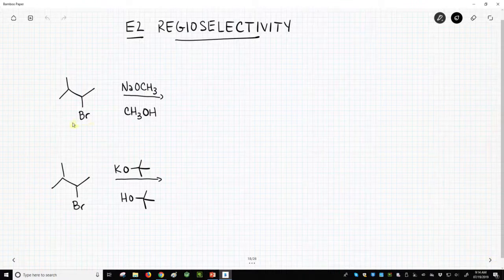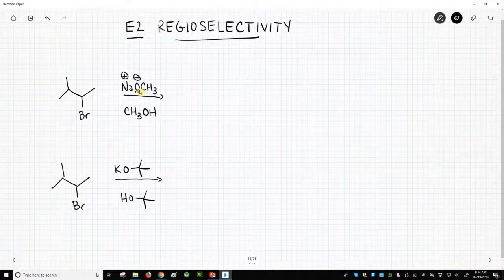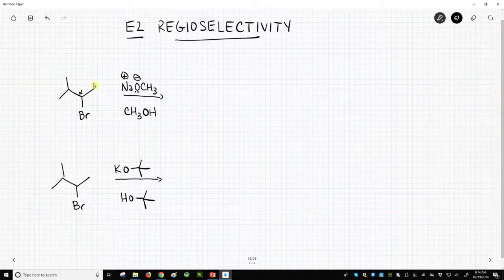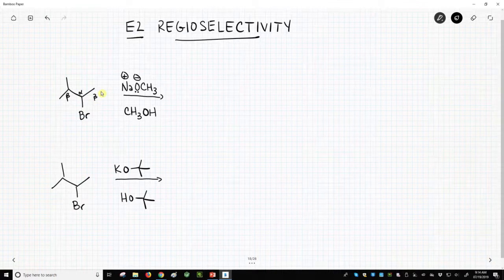So here we have an alkyl halide, a secondary halide, and we're going to react this with a base. We have a strong base in our reaction, and so this strong base is going to remove a beta hydrogen. Here's our halide, there's our alpha carbon attached to the halide, and then we have two beta carbons, and this is our regioselectivity.